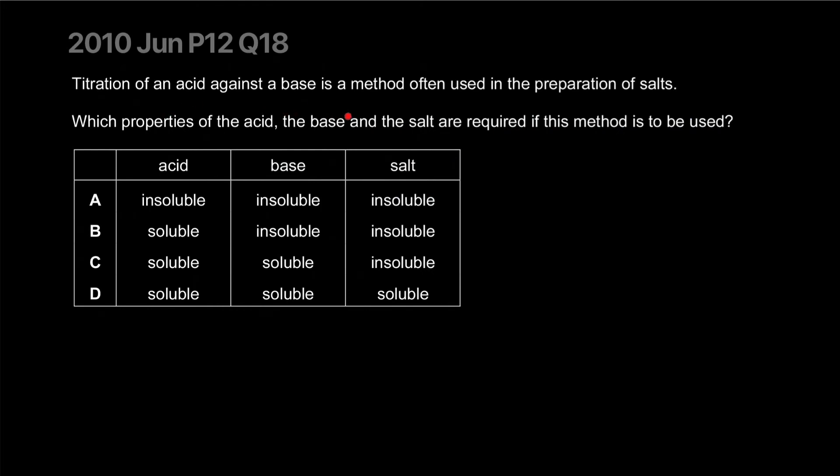Titration of an acid against a base is a method often used to prepare salts. Which property of acid, base, and salt all require? They all need to be soluble for it to work.